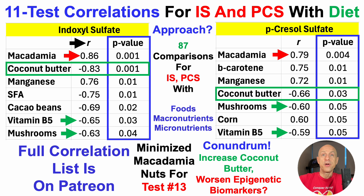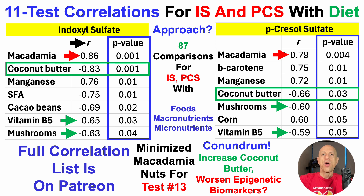So the question is: do I increase coconut butter to improve levels of these two metabolites associated with all-cause mortality, but potentially worsen the epigenetics? It also raises which markers I value more — metabolomics, which reflects what's happening recently, or epigenetics, which may reflect what can happen rather than what is currently happening. For now, I'm favoring the metabolomics over the epigenetics, and I'm happy to discuss that further in the comments.